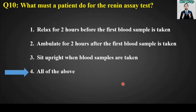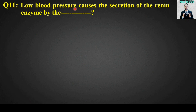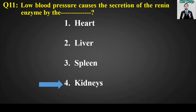MCQ number eleven: Low blood pressure causes the secretion of the renin enzyme by the blank. Options are: heart; liver; spleen; kidneys. The right answer is option number four — kidneys.